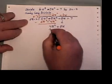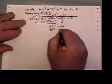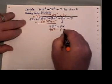3x times 3x, 9x squared, 3x times minus 2 is minus 6x.